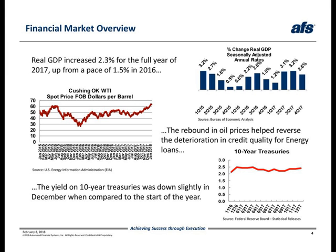Starting at the top of slide four, we provide some economic statistics to help put the fourth quarter results as well as the results for the entire year of 2017 into perspective. We can see that following two strong quarters, the pace of annualized real GDP growth fell to 2.6% in the latest quarter's release, but was well above the 4Q16 rate of just 1.8%. For the full year of 2017, real GDP increased 2.3%, which is up from 2016's increase of just 1.5%.